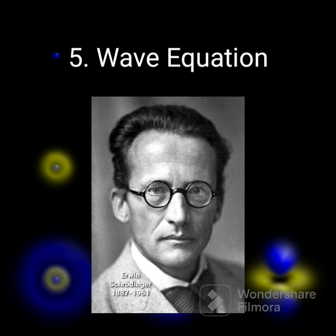5. Schrödinger's Wave Equation, 1926: Austrian physicist Erwin Schrödinger formulated a wave equation that described the behavior of electrons as wave functions. This equation allowed scientists to calculate the probability of finding an electron at a particular location within an atom's energy levels, leading to the development of quantum mechanics.